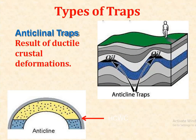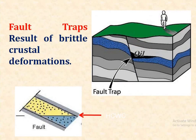Types of traps: the first is anticlinal traps, which result from crustal deformation. These diagrams show anticlinal traps where the accumulation of petroleum takes place in fold traps.